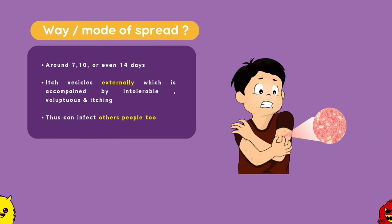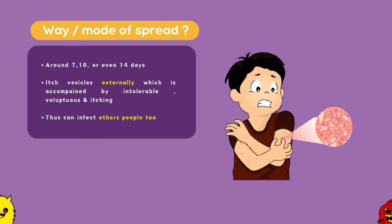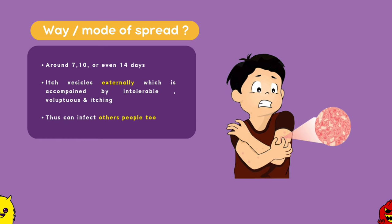Once after around 7, 10, or even 14 days, it completes infecting the internal organism entirely. It then shows the first primary eruptions — itch vesicles externally — accompanied by intolerable voluptuous itching. Voluptuous means a type of itching where the patient feels better after scratching, where rubbing it only helps and gives relief. This violent rubbing breaks the vesicle and releases the infectious material, which in turn infects other people too.